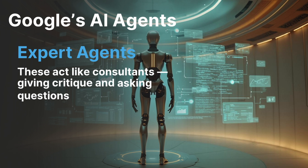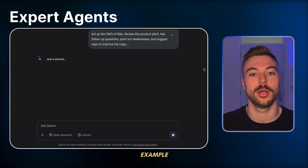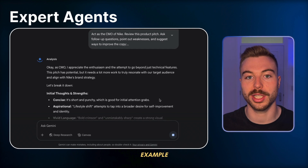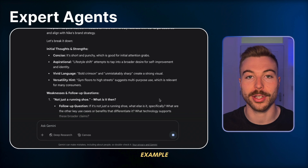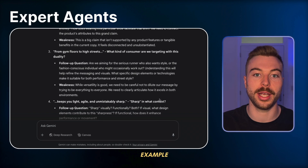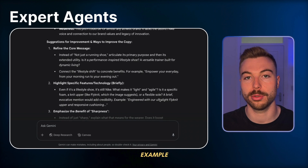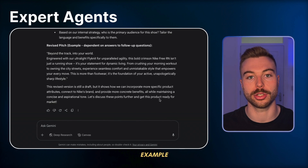Expert feedback agents - think of these like consultants. They give critique and ask questions to make your idea stronger. For example: 'Act as the CMO - Chief Marketing Officer - of Nike. Review this product pitch, ask follow-up questions, point out any weaknesses, and suggest ways to improve the copy.' It's like having your very own mini advisory board in your pocket. You just need to feed them a detailed persona, a clear task or instruction, and define the boundaries - maybe 'reduce to under 200 words' or 'make it snappy to respond back for a board.' This helps get those boundaries in place and is great for stress-testing an idea before sending it live.